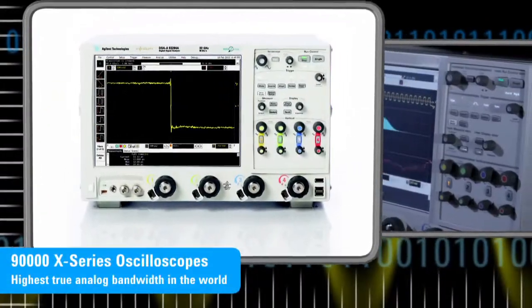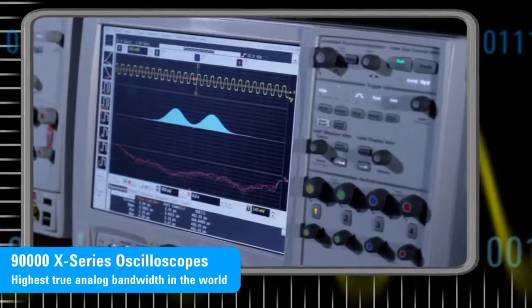The 90,000X series is the highest performance oscilloscopes in the world. It has the highest analog bandwidth of any oscilloscope on the market.